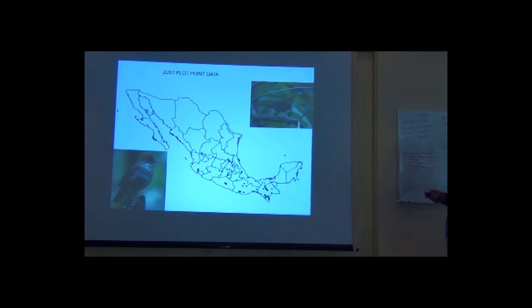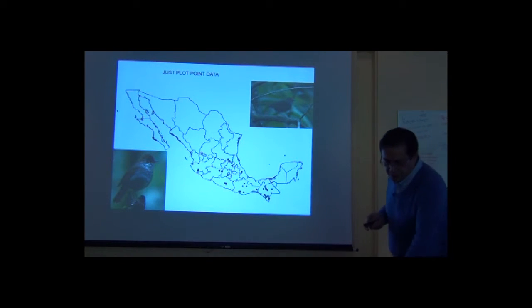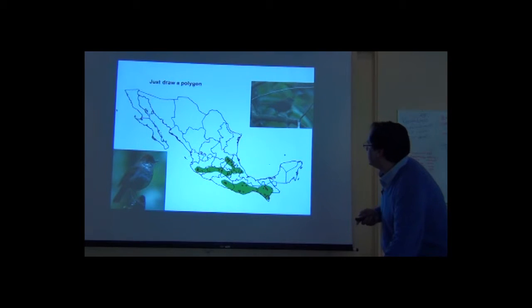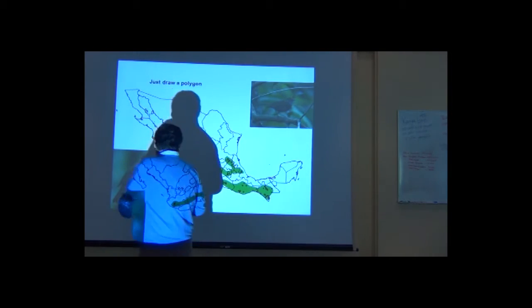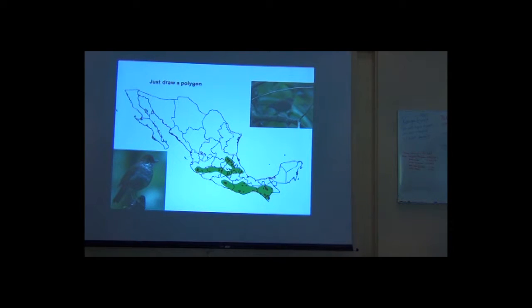For example, the more basic picture of the distribution of the species is based on data points. This is the main data that we have. And here's what we have been done for many years for constructing the distribution of the species.